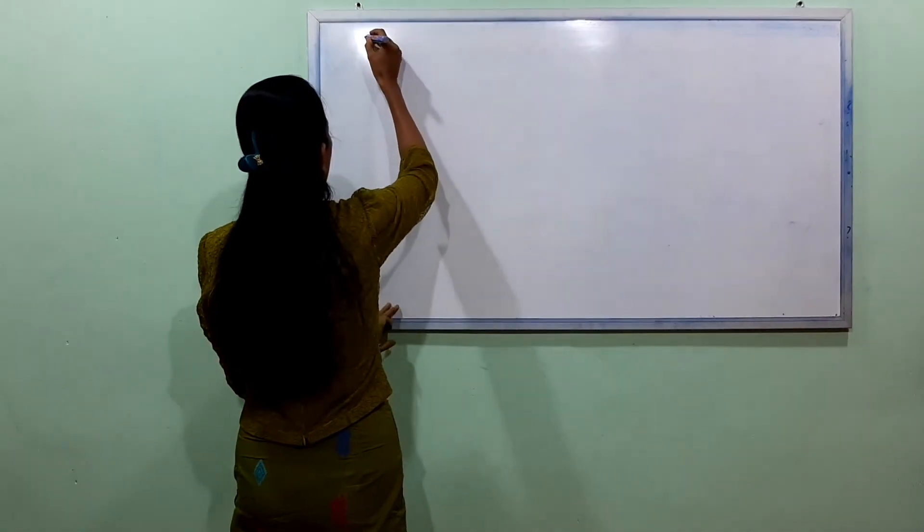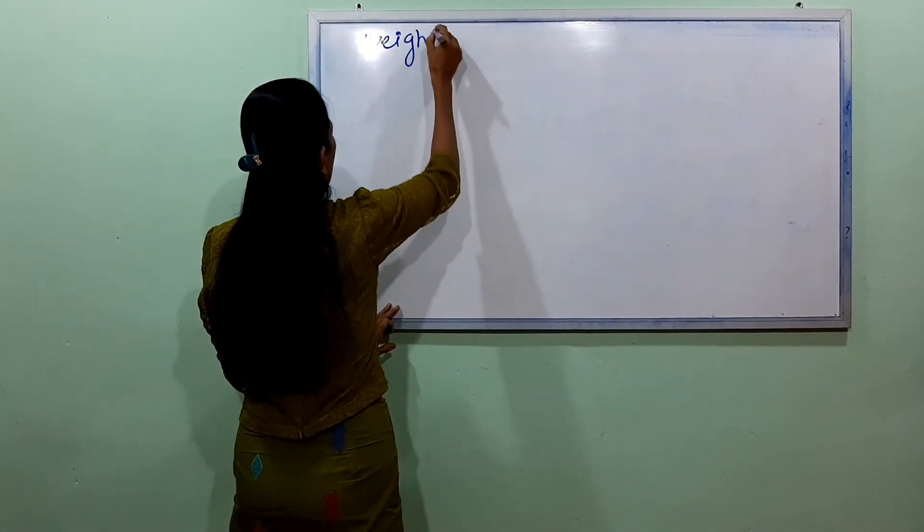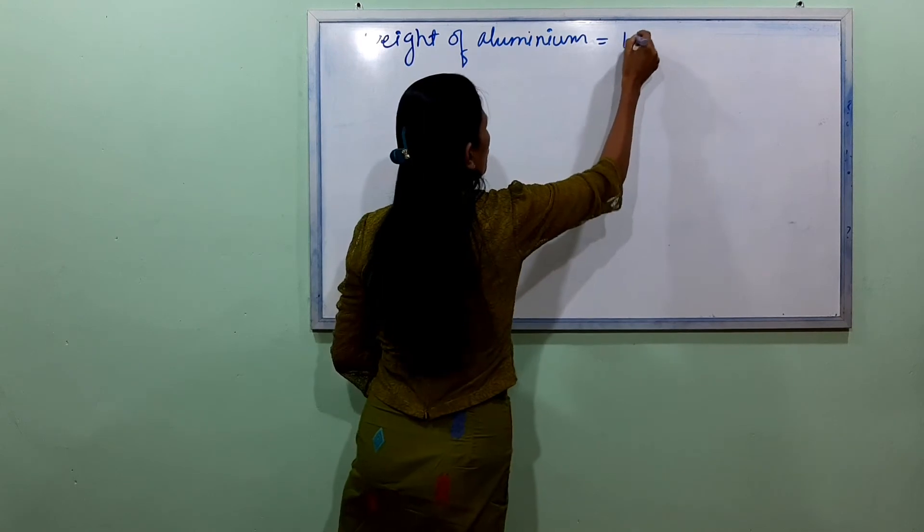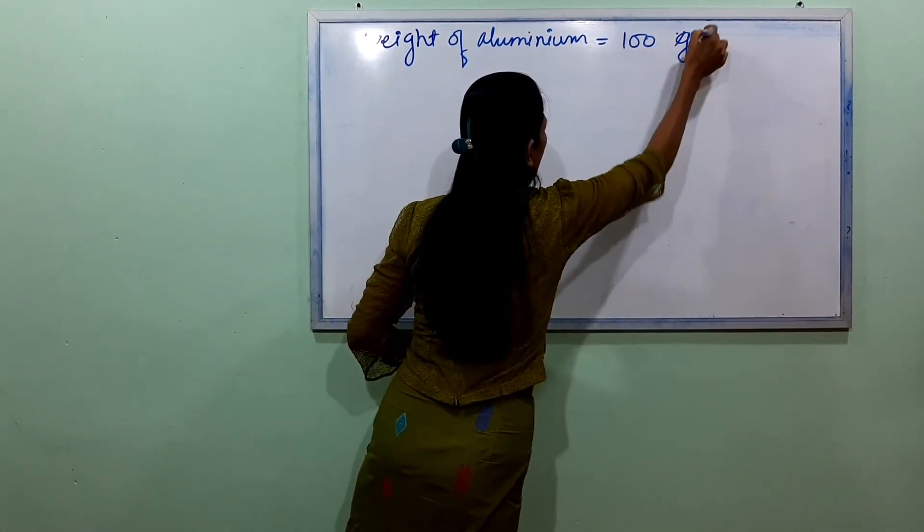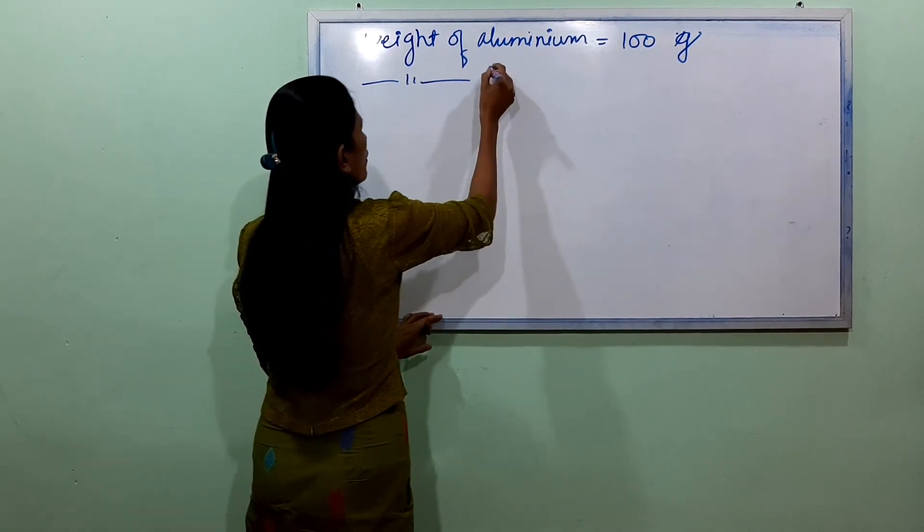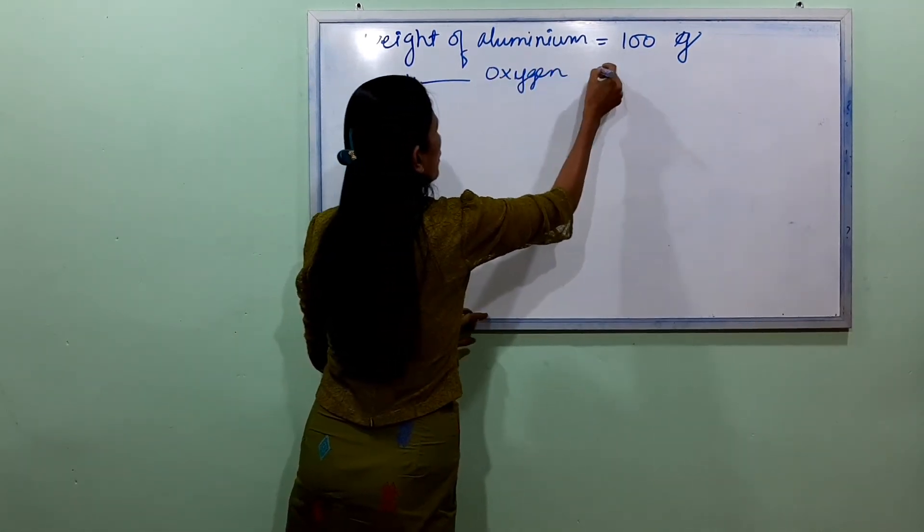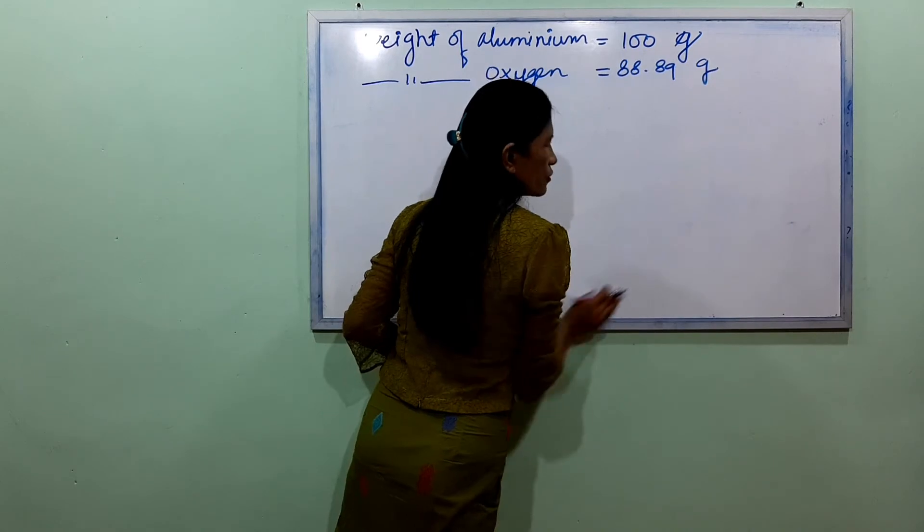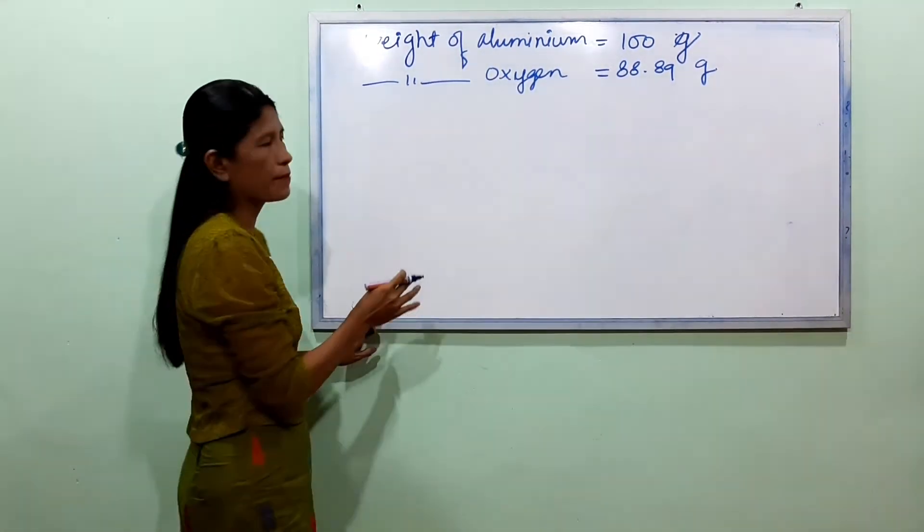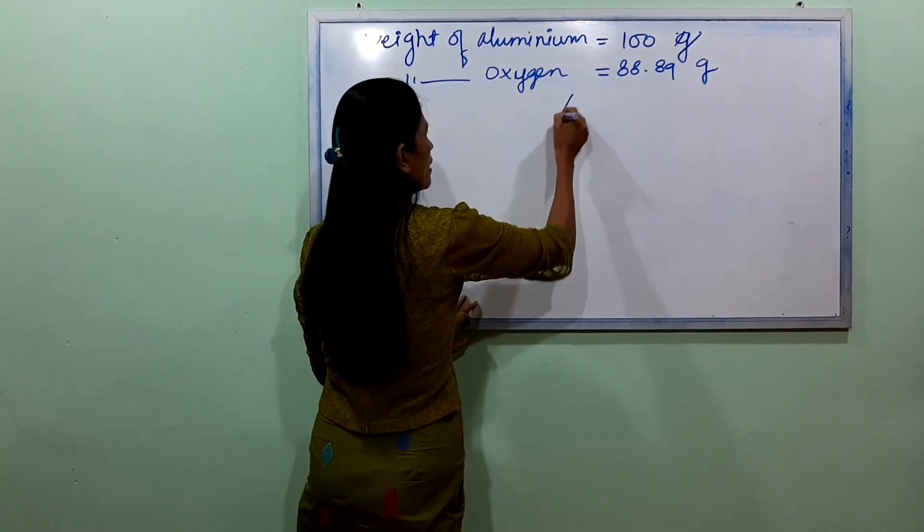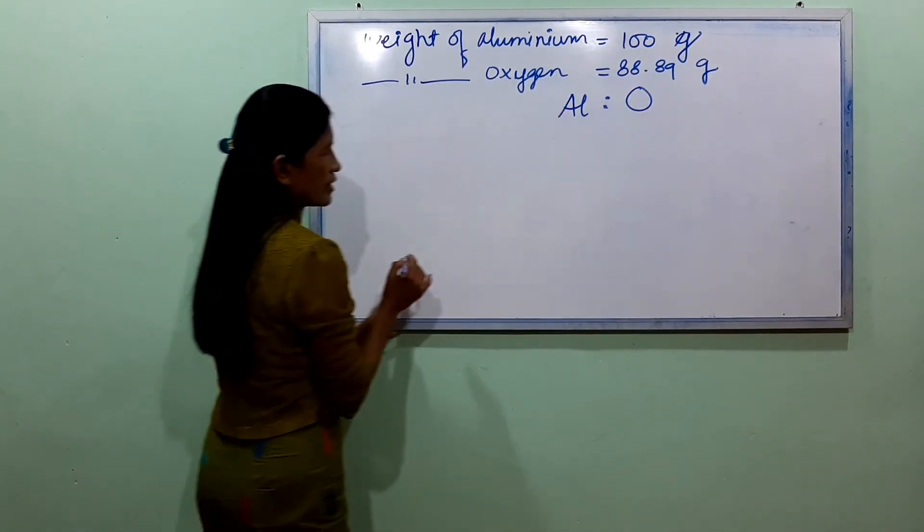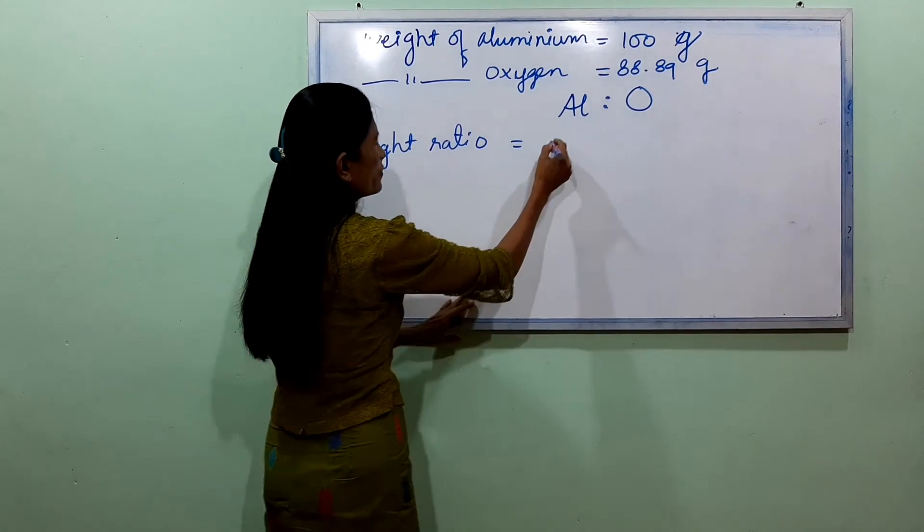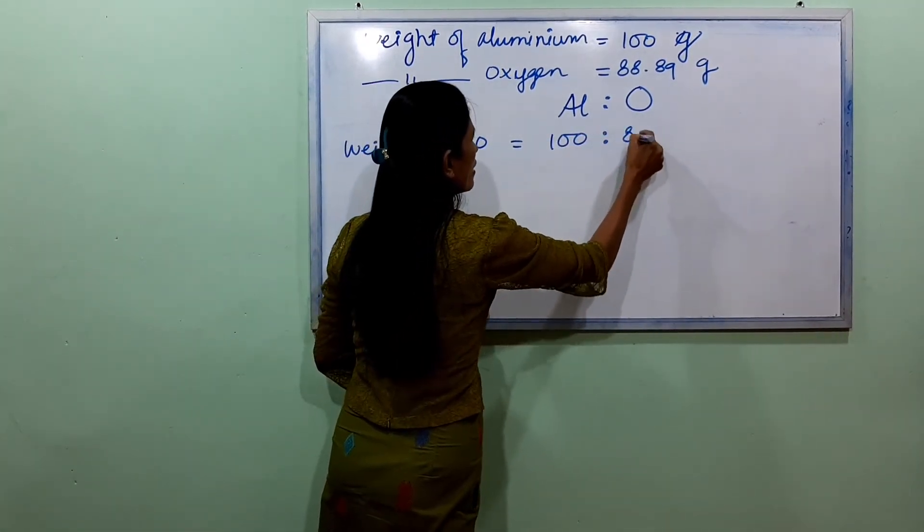We can assume 100 grams of aluminum and 88.89 grams of oxygen. This gives us the weight ratio of aluminum to oxygen.